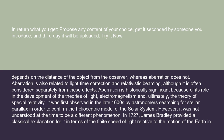Aberration is historically significant because of its role in the development of the theories of light, electromagnetism, and ultimately the theory of special relativity. It was first observed in the late 1600s by astronomers searching for stellar parallax in order to confirm the heliocentric model of the solar system. However, it was not understood at the time to be a different phenomenon.